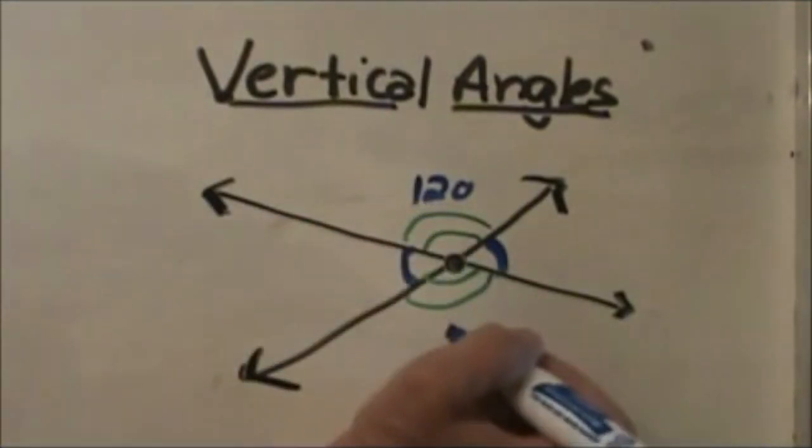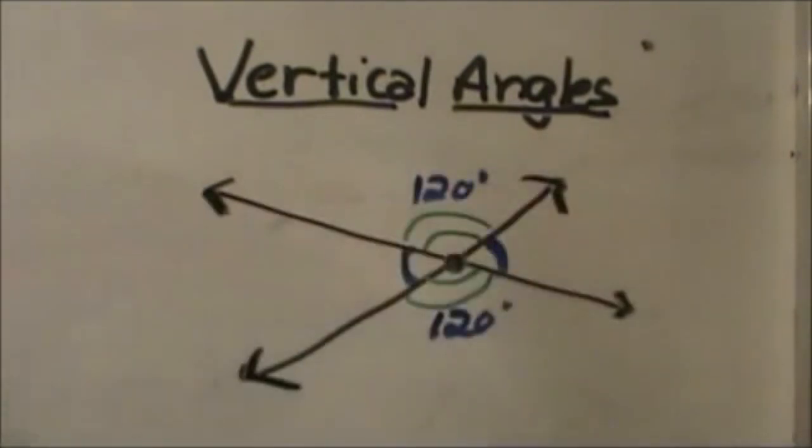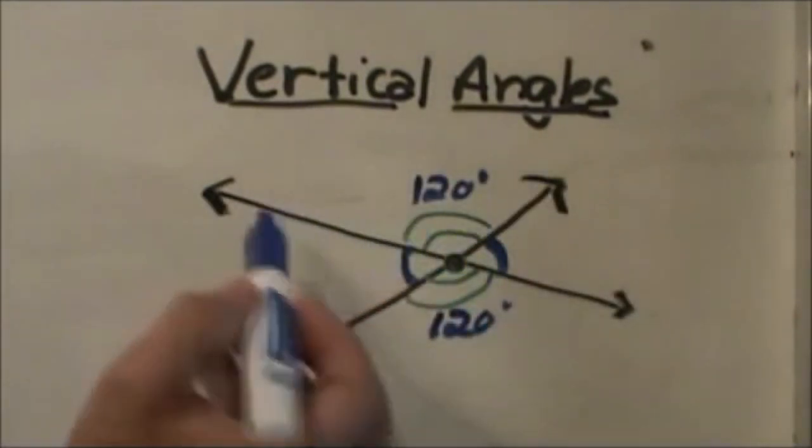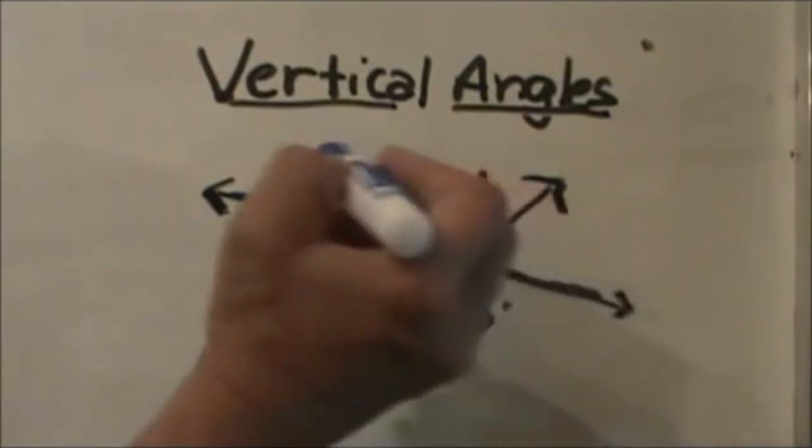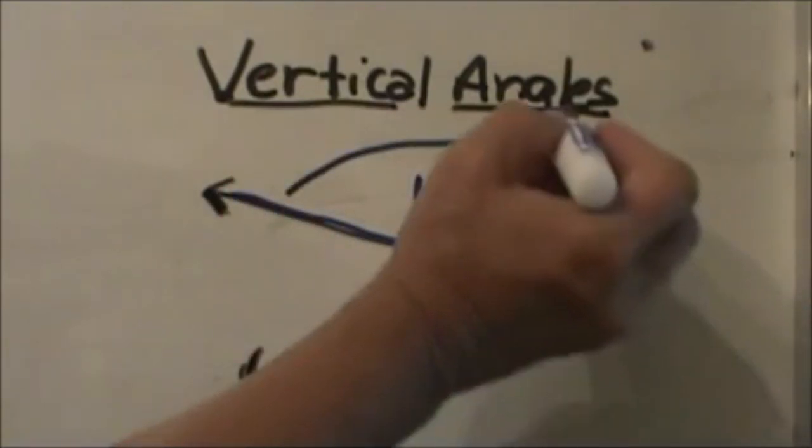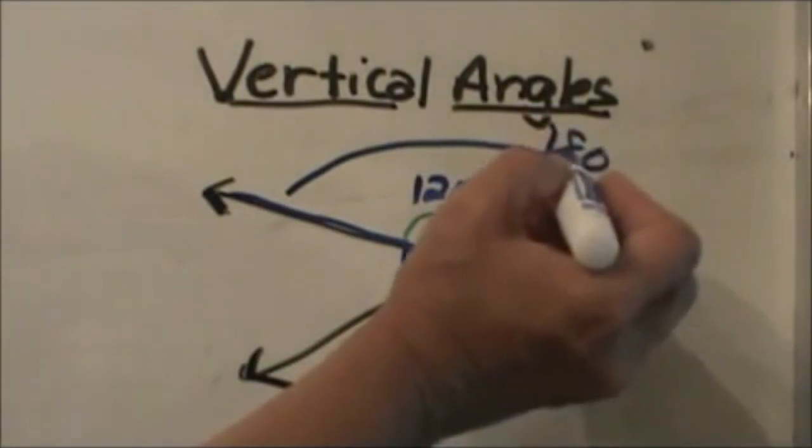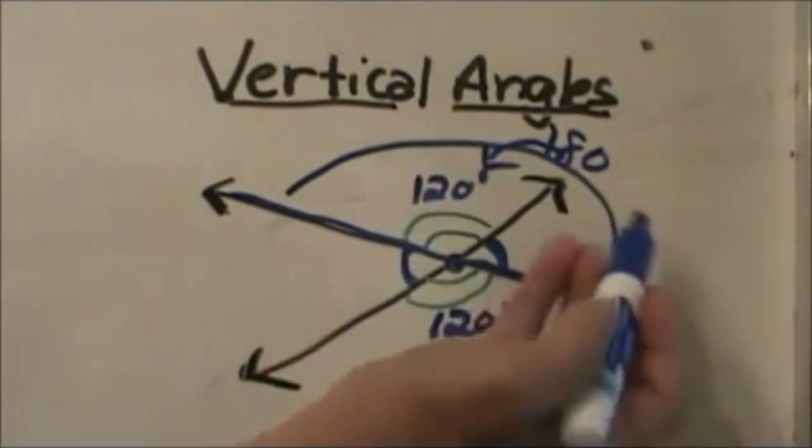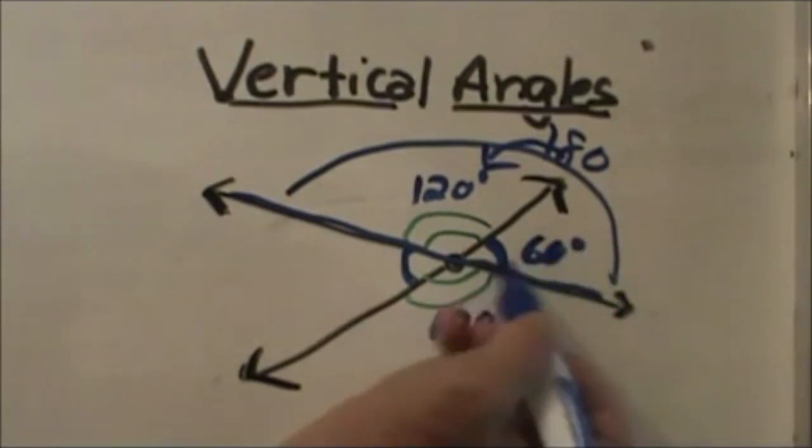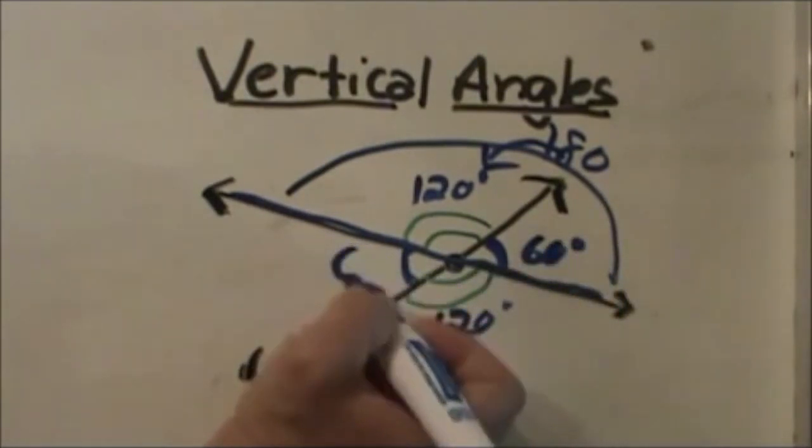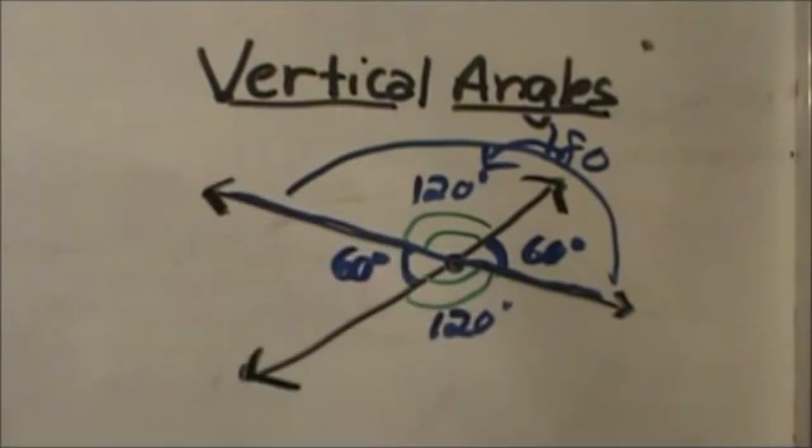If this one is 120 degrees we know this one has to be 120 also because they're vertical angles. Now if you'll notice this is a straight line and we know that lines add up to 180. So if 120 is here that means we have 60 degrees left for this side which means this vertical angle is also 60 degrees.